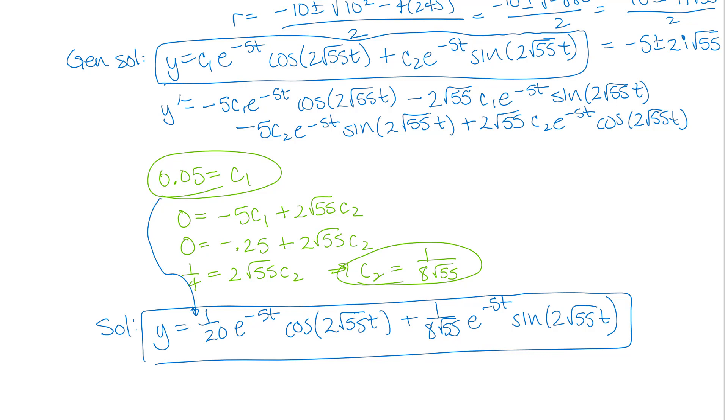Also, you can tell what the period of those oscillations is, since both of these two trig functions have this 2 times square root of 55 inside the trig function times the t. We can just take 2 pi over that number to find the period of the oscillations. Of course, you can simplify that.